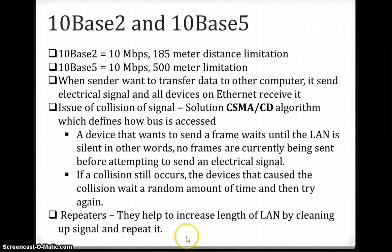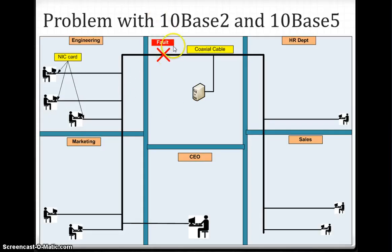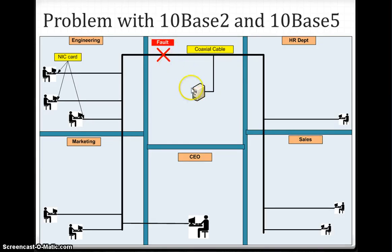A repeater extends the cable length by cleaning up and repeating the signal. For example, with 10Base-2, if you want to send data 300 meters, you place a repeater at 150 meters. However, the fault problem remains: if a cable fault occurs, the affected devices cannot talk or transfer files with HR and other departments because the server is unreachable.